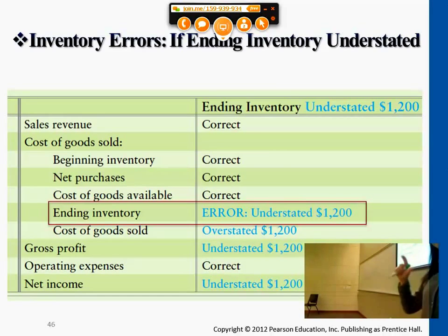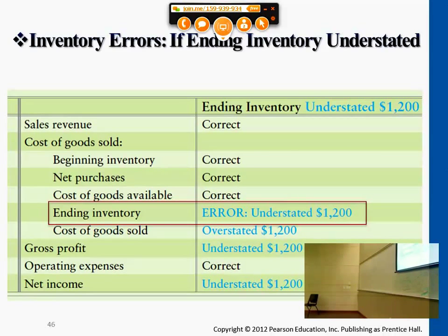If expenses are overstated, then your income will be less than what you actually have. Net income and gross profit will have an understatement of the same dollar amount. Cost of goods sold expense is the only account that moves in the opposite direction compared to ending inventory, gross profit, and net income.